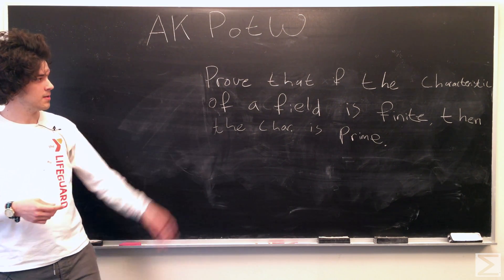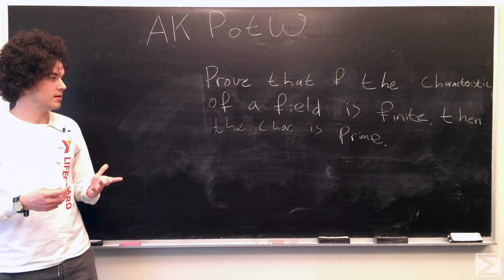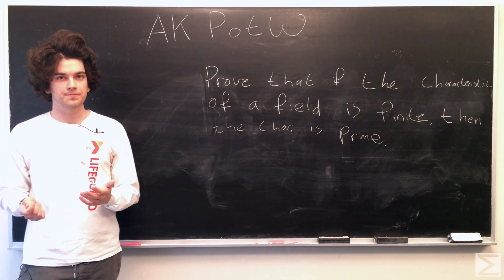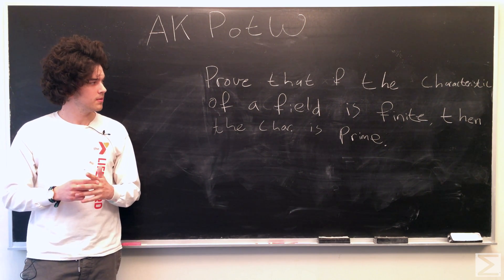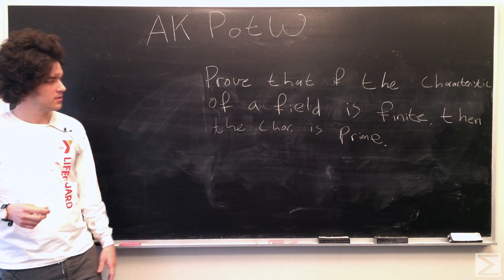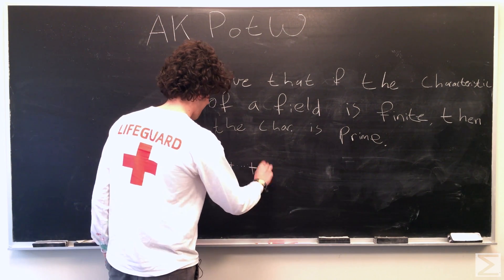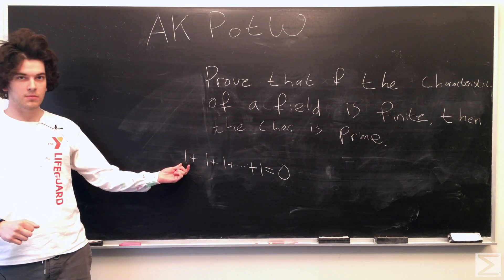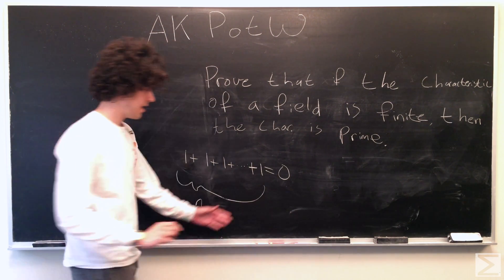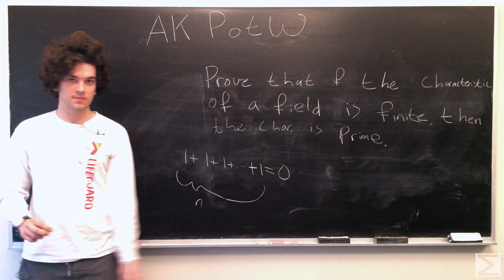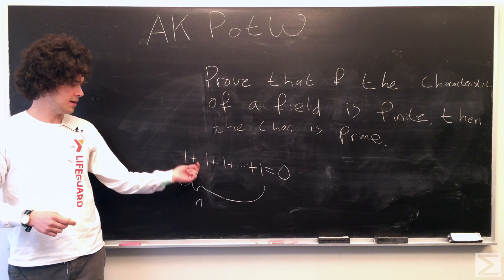So this is the statement we're going to prove: if the characteristic of a field is finite, then the characteristic is prime. If you don't know what a field is, maybe brush up on that. But the characteristic is easy enough to explain. If we take the multiplicative identity and add that up n times, then we get the additive identity.